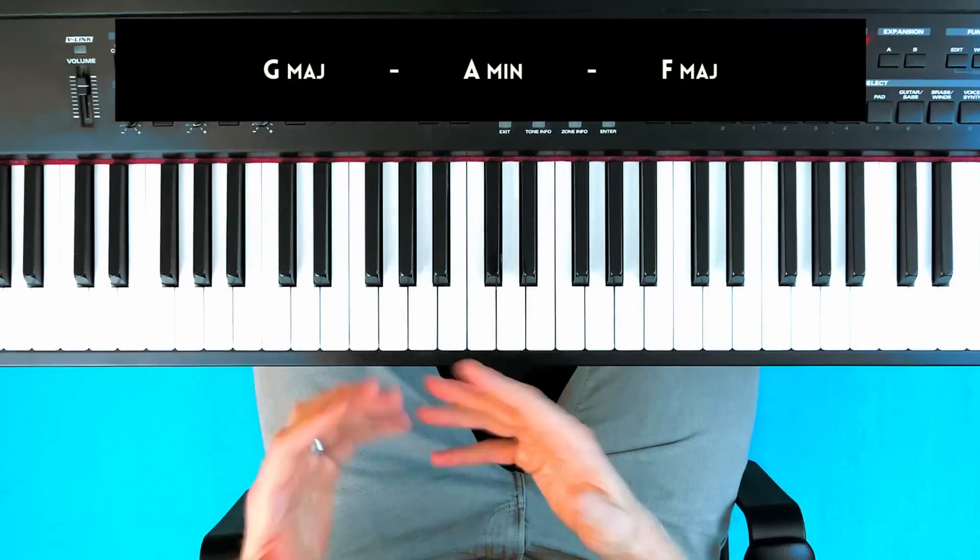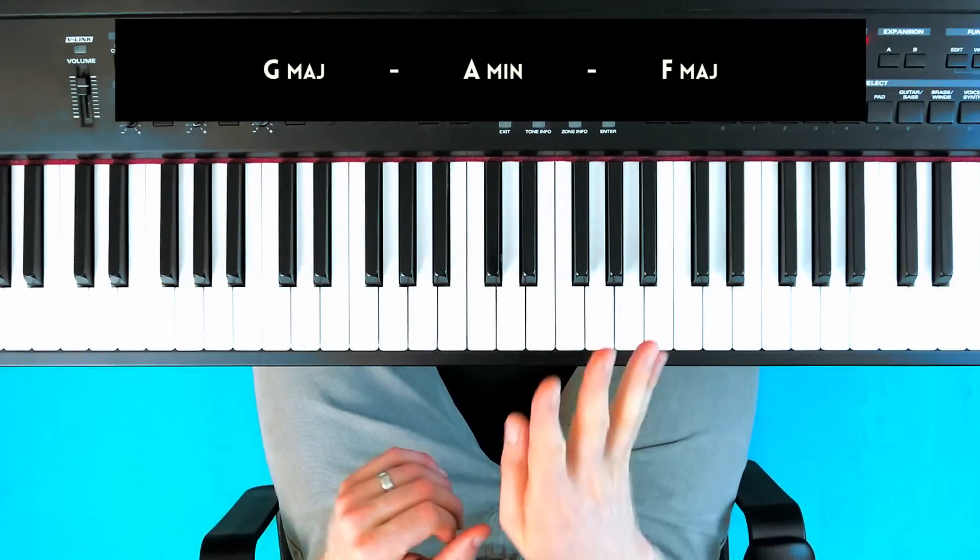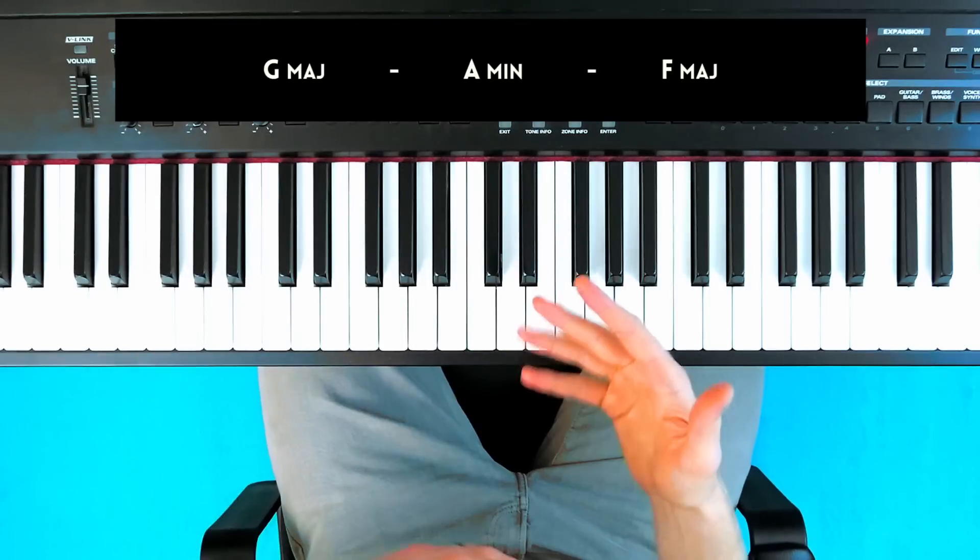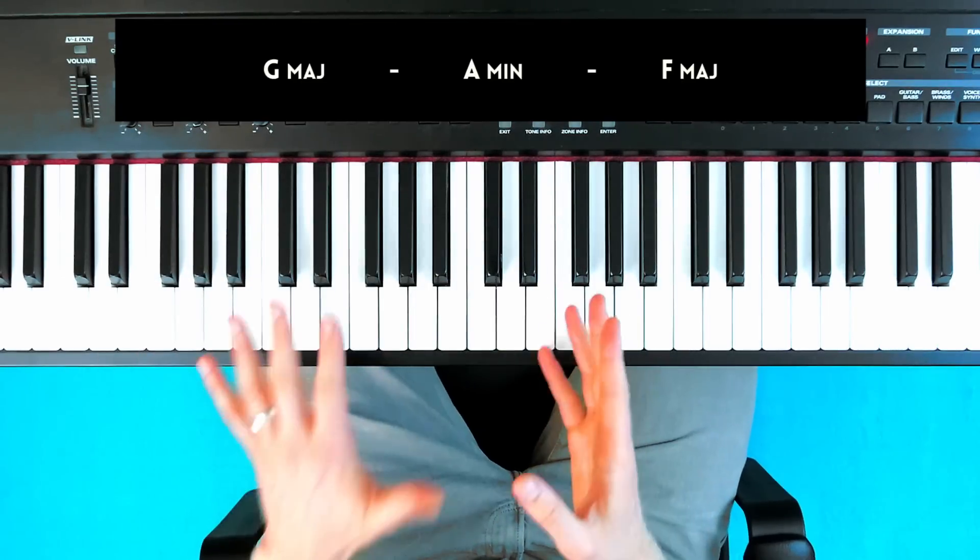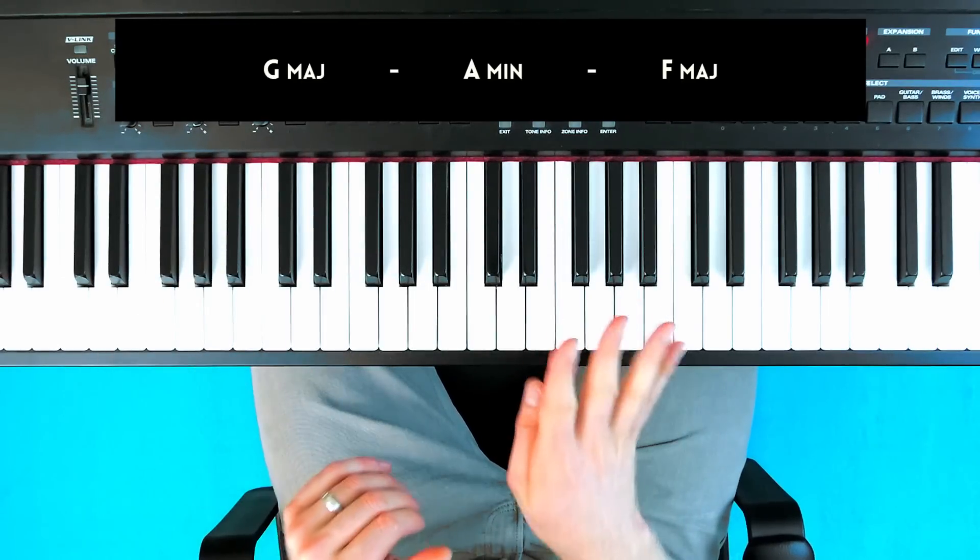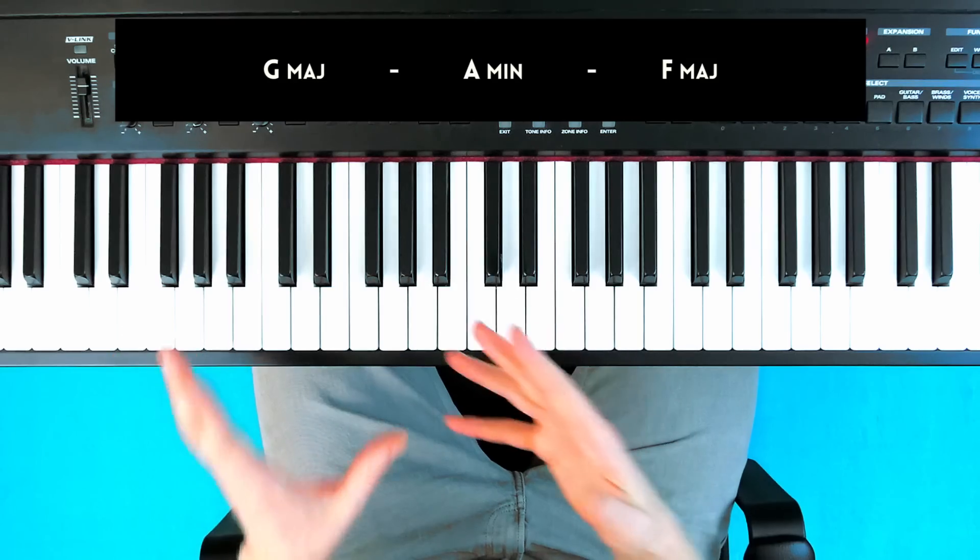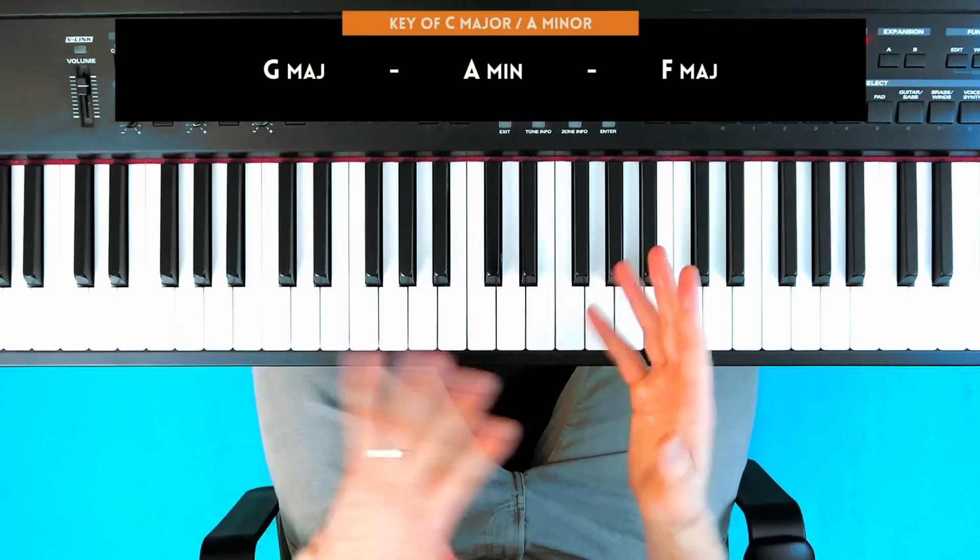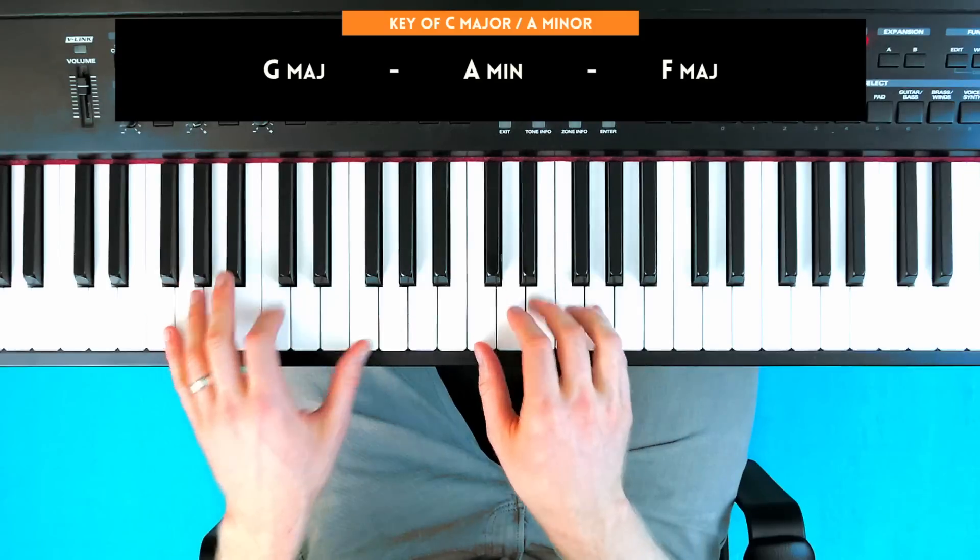This is a very simple chord progression. It's just three of what I call the four pop chords. You might be familiar with this concept that a lot of pop music uses just four chords. I'm demonstrating in the key of A minor here, which is the same key as C major.